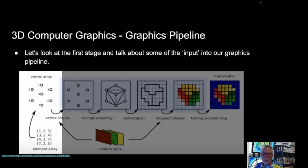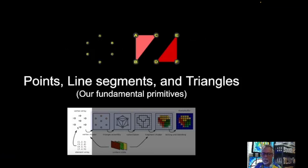So we have triangles: one, two, three; three, two, four; four, two, seven; four, two, seven — we have these triangles in here. Our fundamental primitive is triangles. Everything is made out of triangles.